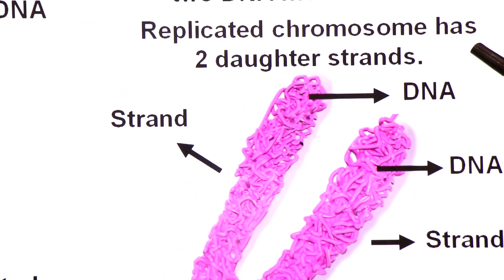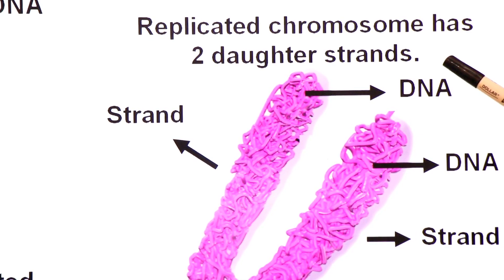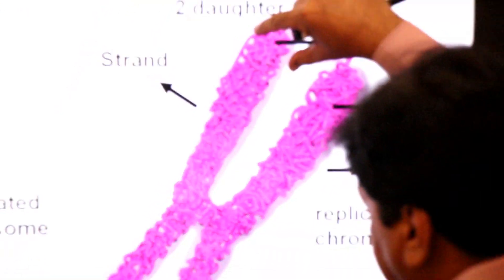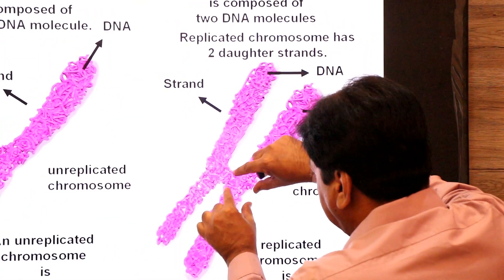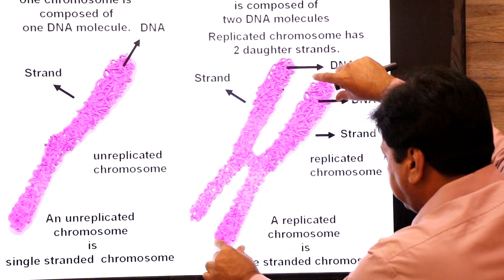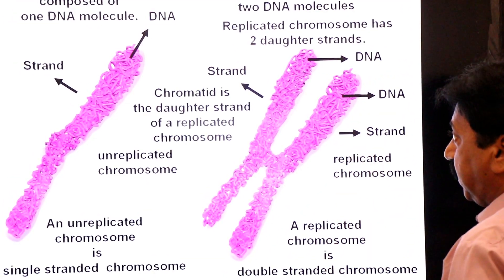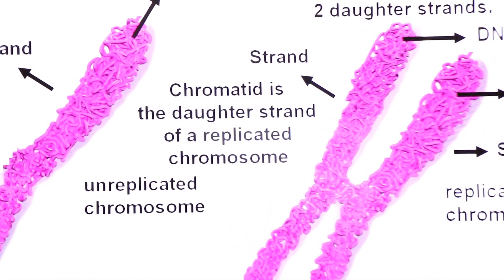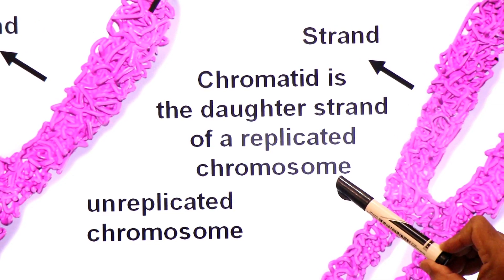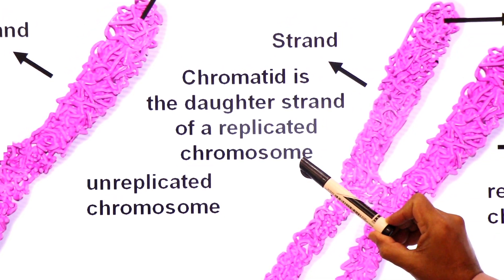A replicated chromosome has two daughter strands. Each daughter strand of the replicated chromosome is called a chromatid. Chromatid is the daughter strand of a replicated chromosome.